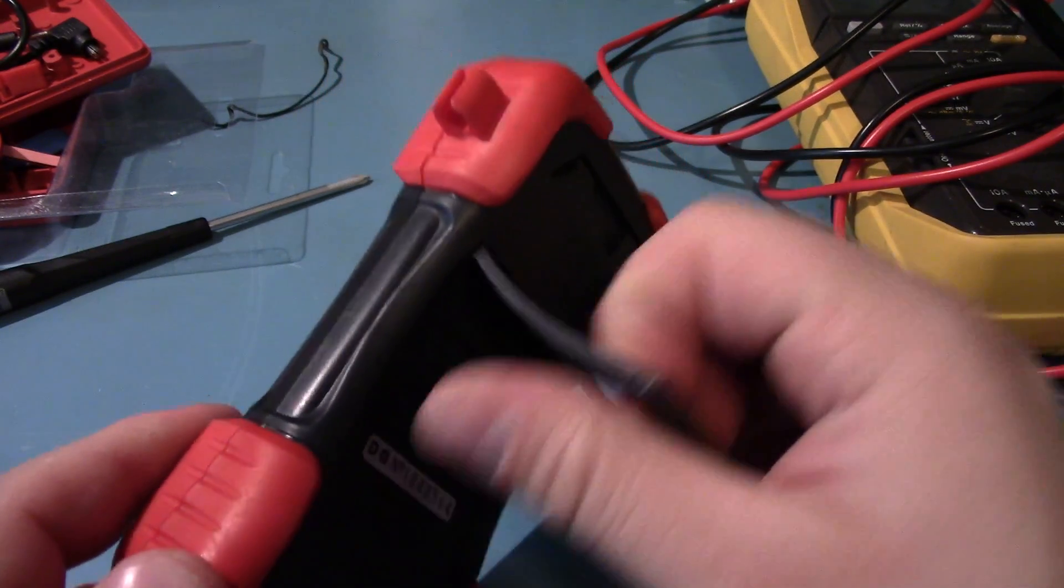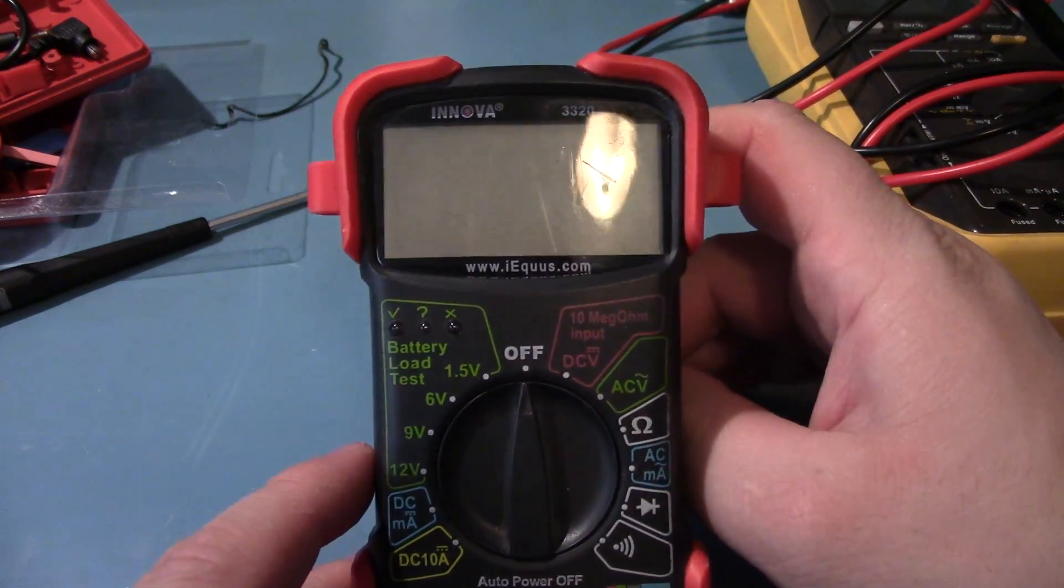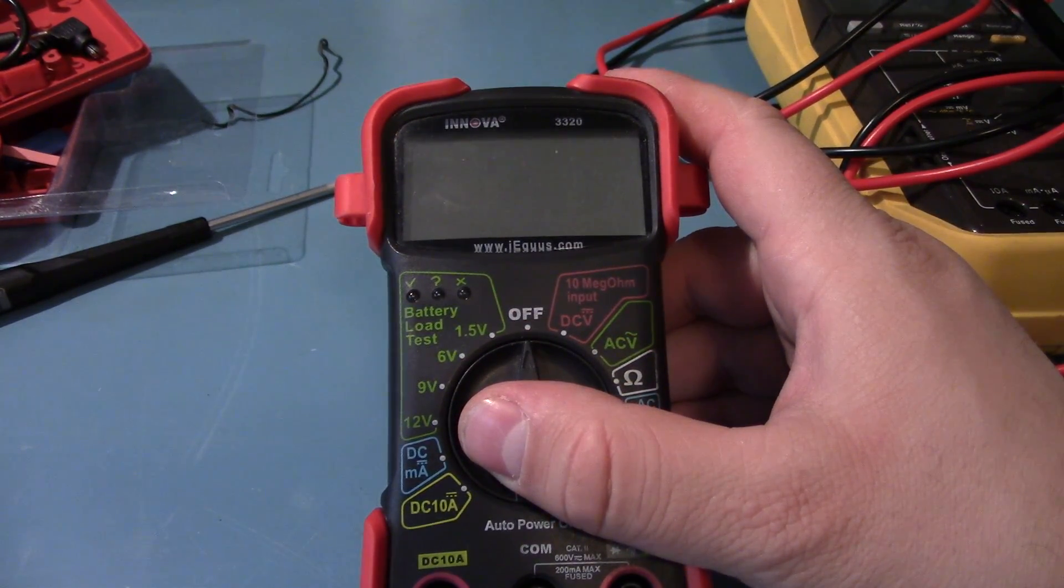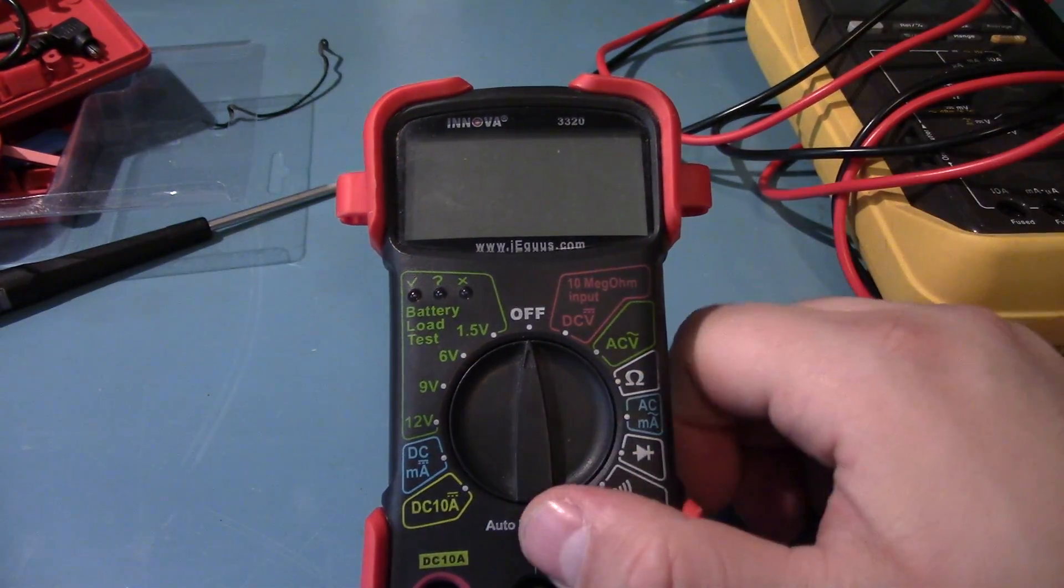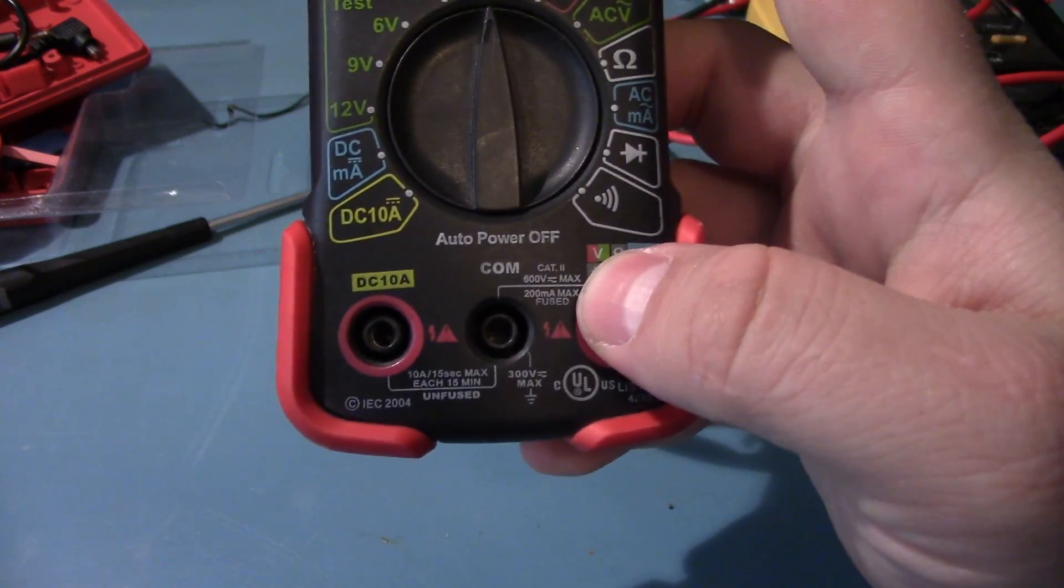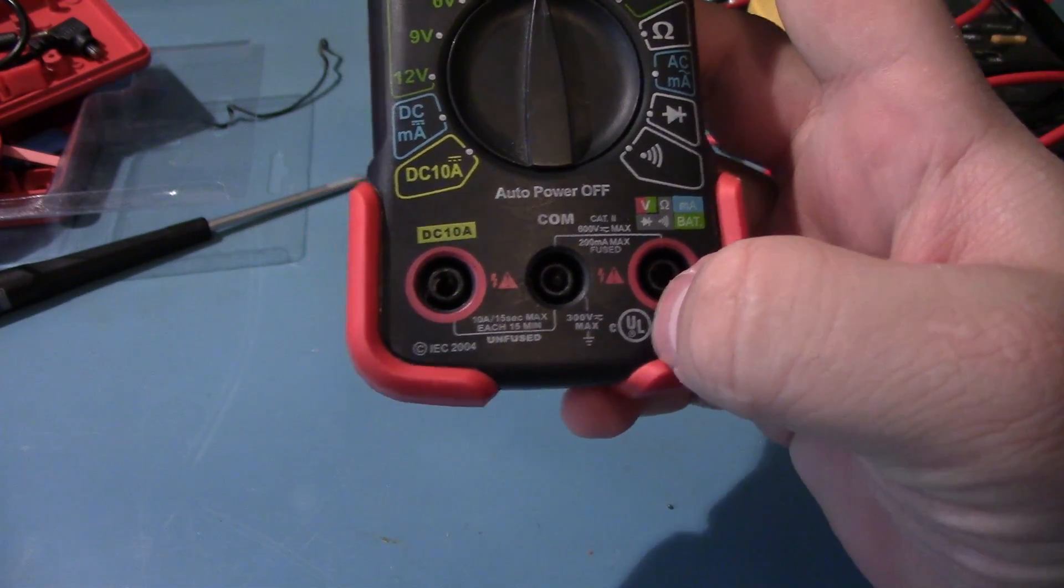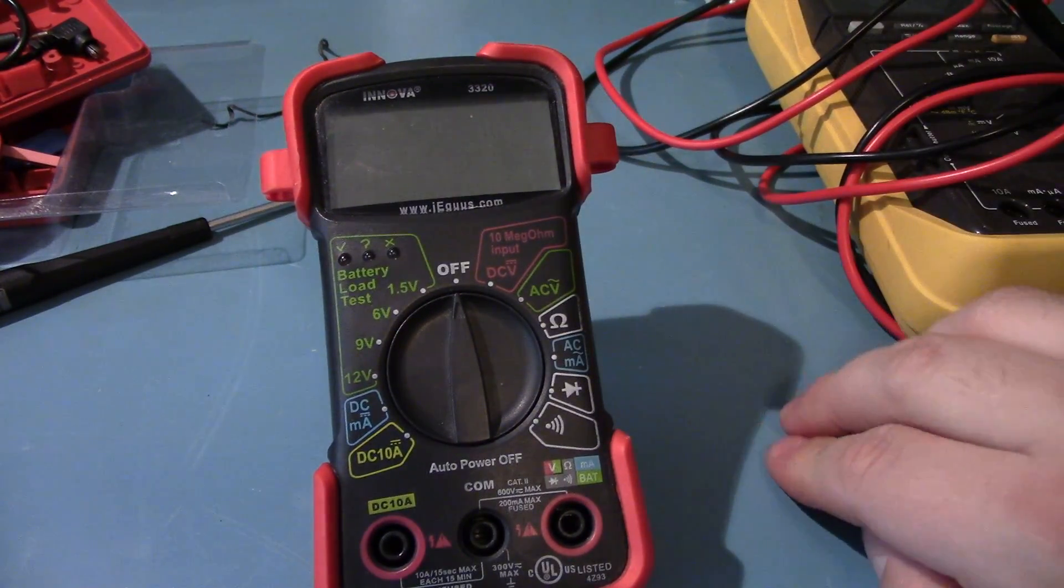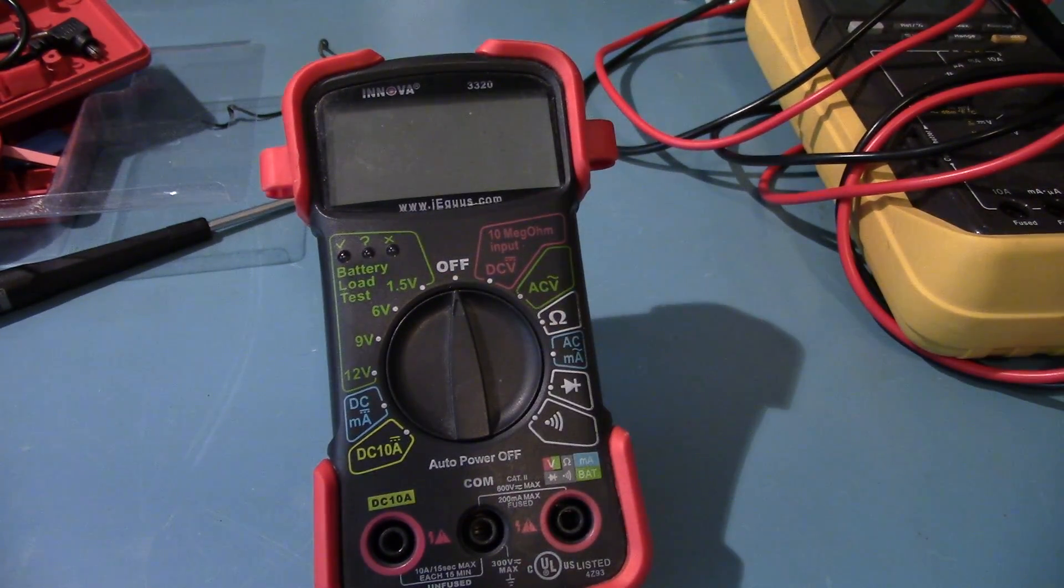When I first started doing electronics again, this is a pretty cheap one - like 20 bucks. I would say this is the bare minimum of what you would want. You don't want to measure mains voltage or anything on this, although it is technically CAT 2 rated and they do actually have a UL listing. This is the minimum of what I would say is probably what you would want. I have measured mains voltages on this.